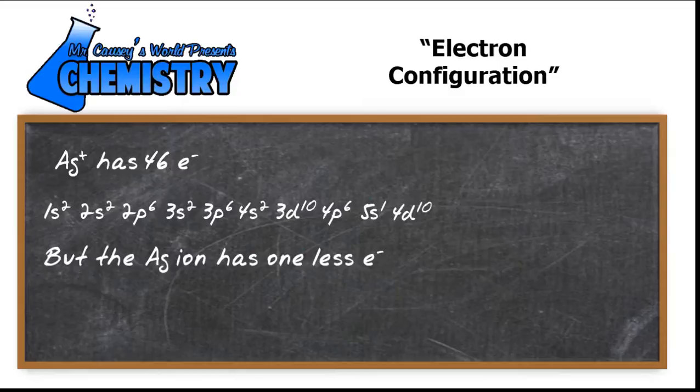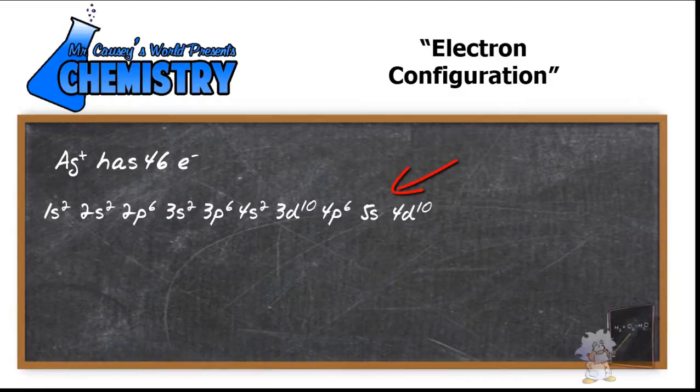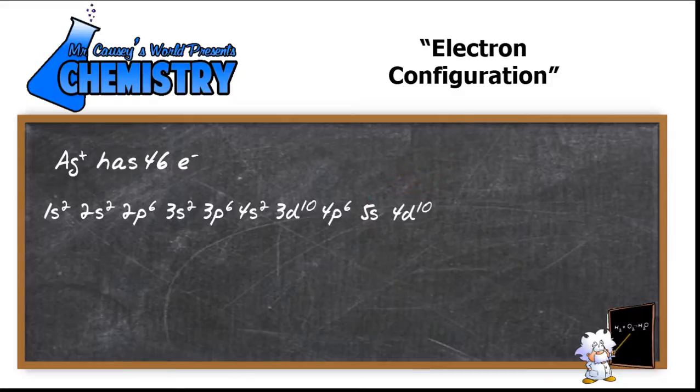Let's do the silver ion, which has one less electron. Where's that electron going to come from? It's going to come from the 5S. So there we have it. There's the electron configuration, and silver tends to have one bond. It gives up that electron.